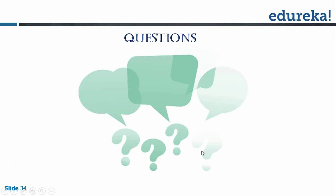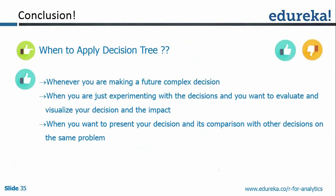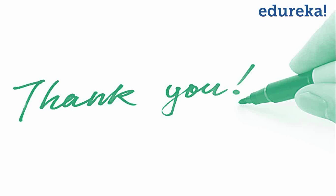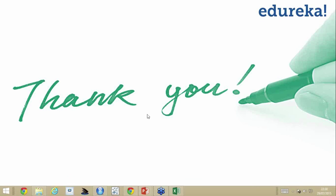I'm open for questions now. Whenever you are making a future complex decision, you can use a decision tree. When experimenting with decisions and wanting to evaluate them visually, or when presenting your decision's comparison with others — use decision tree. Don't forget: at the end, once you close, you'll be shown a feedback survey URL. Please spare just a few minutes — it will take 15-20 seconds to fill in the webinar survey. Thank you so much for attending.